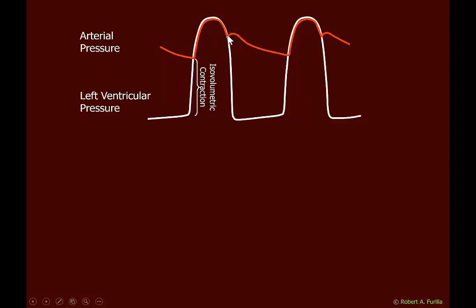We then see what is called a dicrotic notch — a reflection wave. Once the valve closes, blood is reflected back. Right at the valve there is actually a slight sharp spike; if you could place a pressure transducer right at the valve, you would see a very sharp spike followed by a small hump at that point.